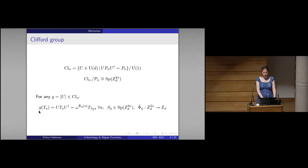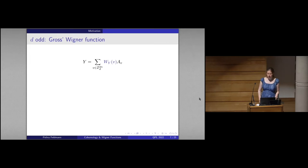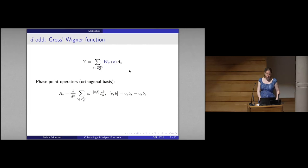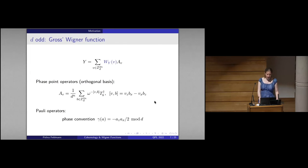A Clifford unitary's action on a Pauli operator is characterized by a symplectic transformation of the Pauli label and a phase function. With this, we can state the definition of the Gross-Wigner function for odd dimensions: it gives the expansion coefficients of any operator in an orthogonal basis of phase point operators. These phase point operators are symplectic Fourier transforms of Pauli operators, and Gross chooses a particular phase convention for them.